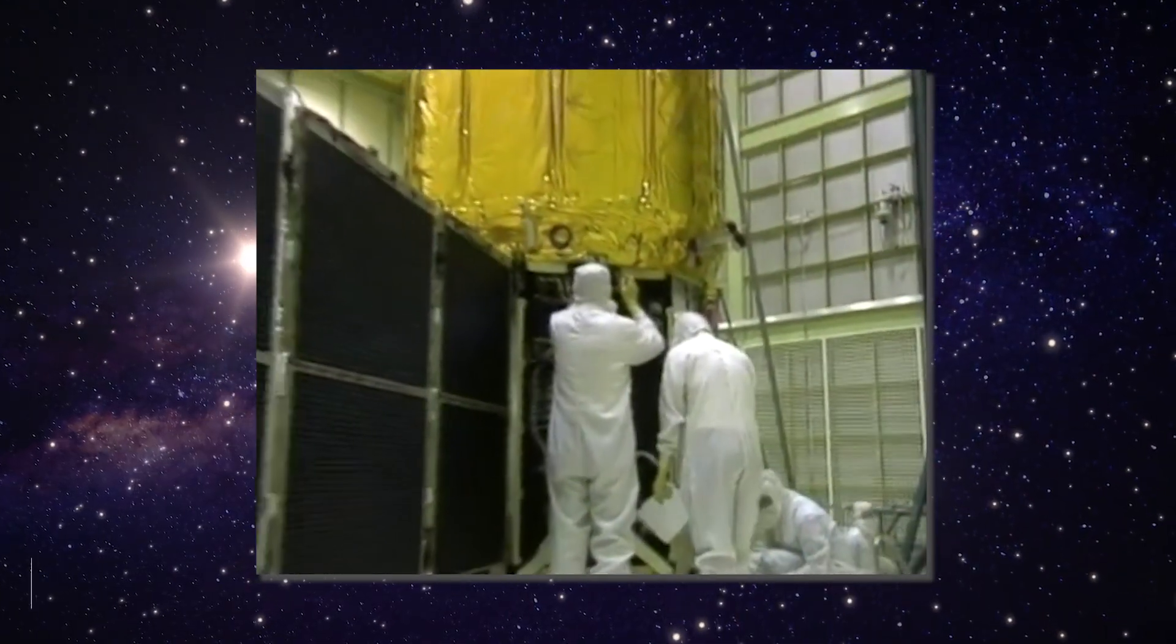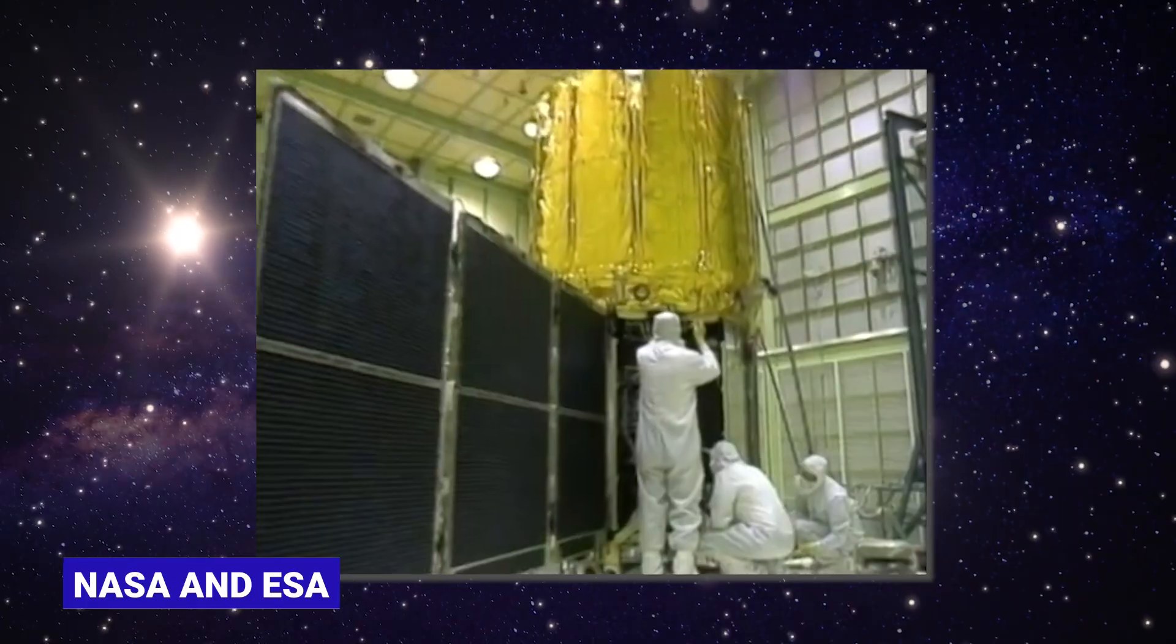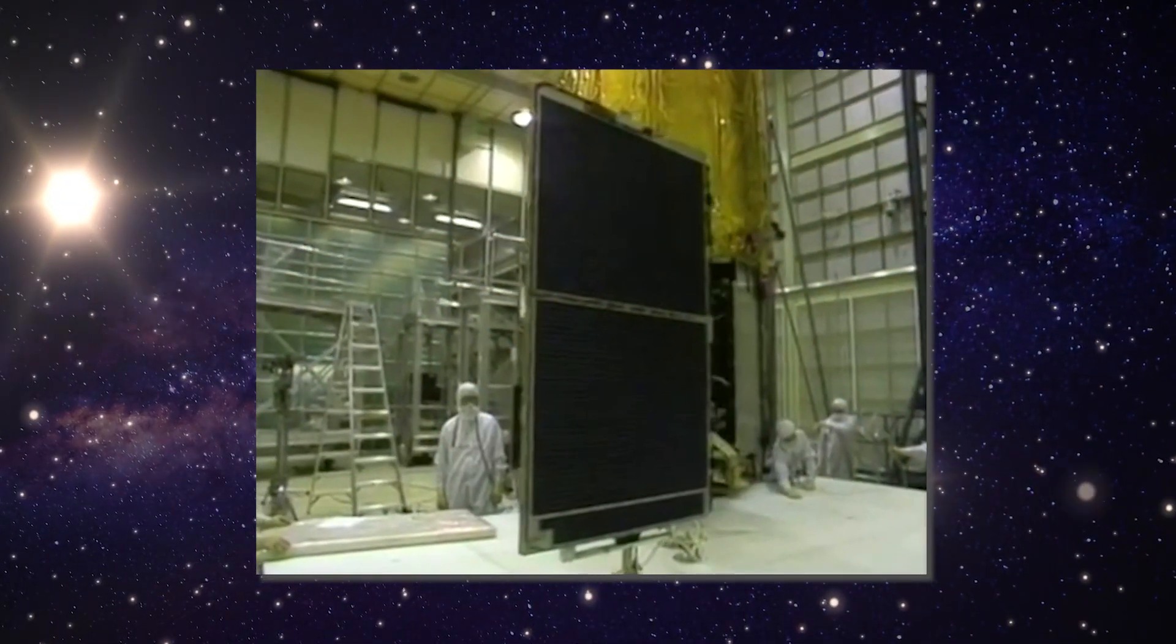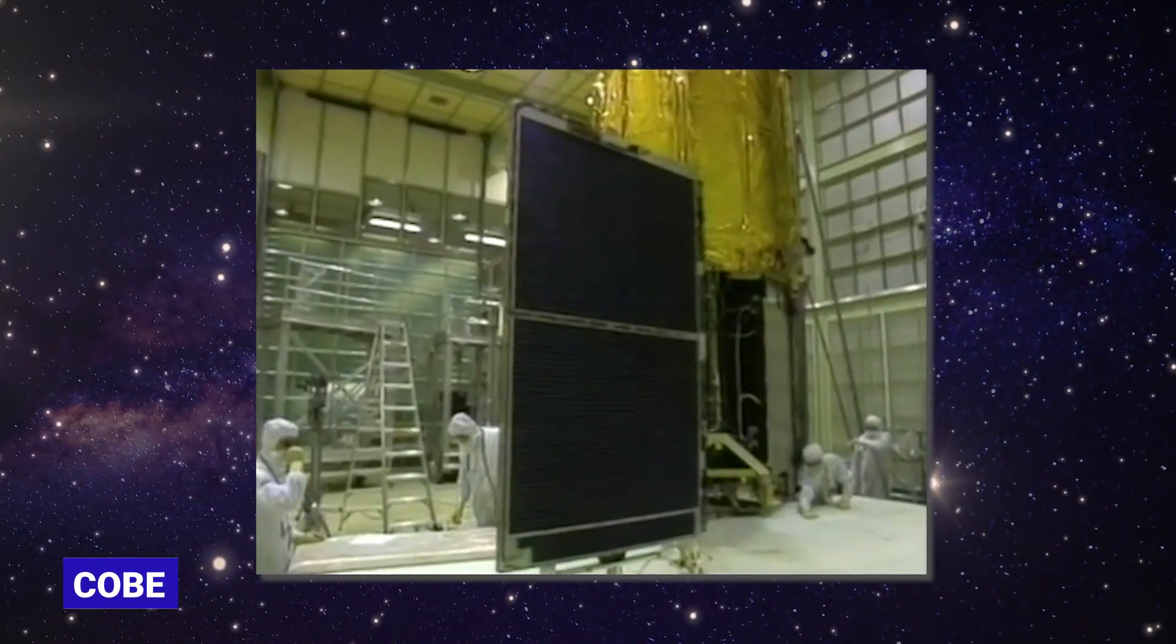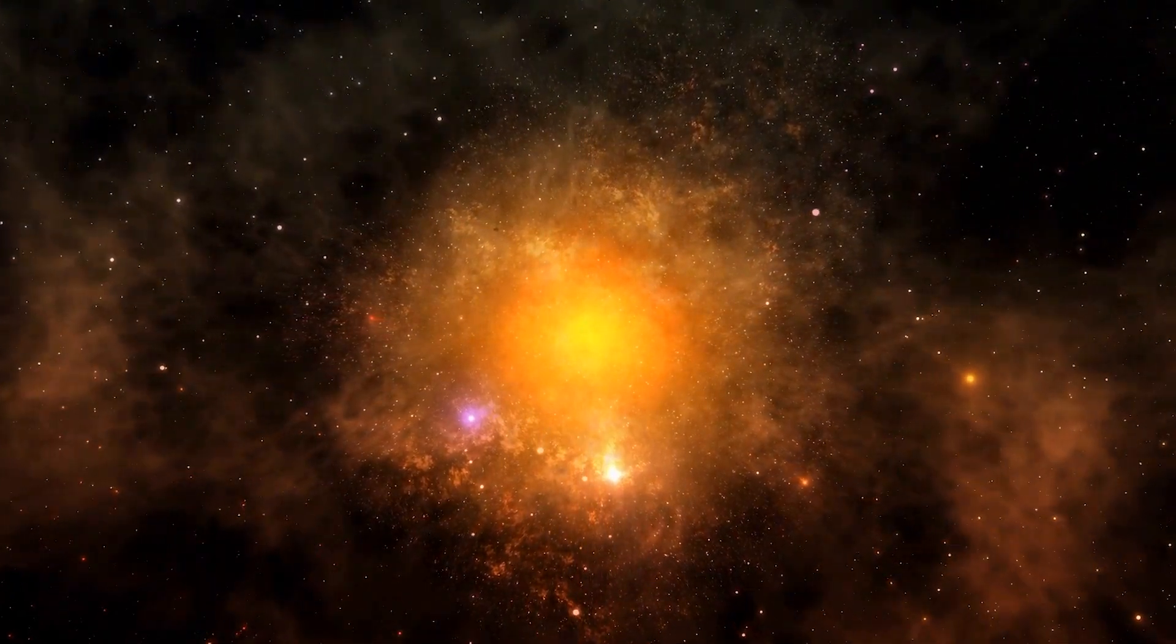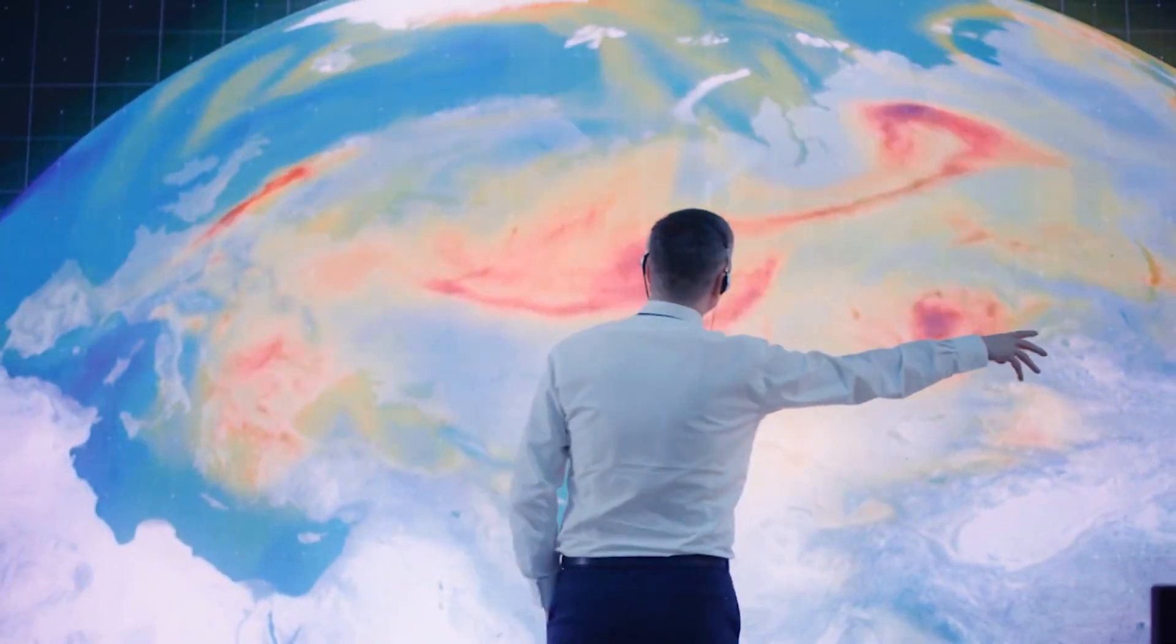Scientists were able to map it with satellites NASA and ESA built called the Cosmic Background Explorer, or COBE, the Wilkinson Microwave Anisotropy Probe, or WMAP, and Planck. The universe at this point was extremely smooth with only tiny ripples in temperature.